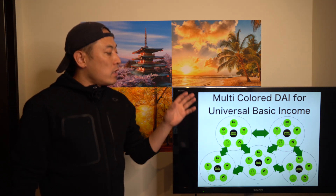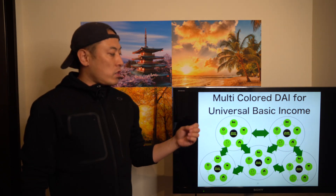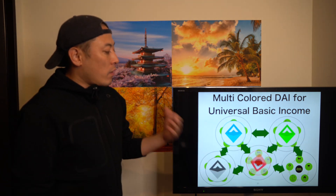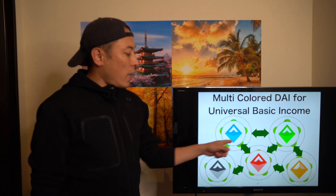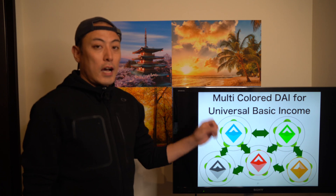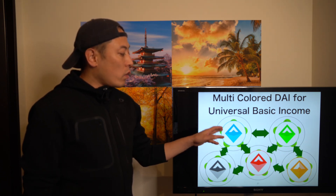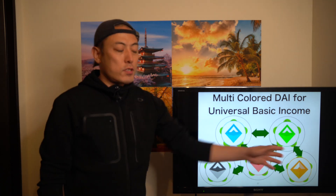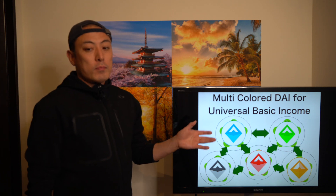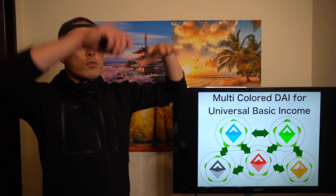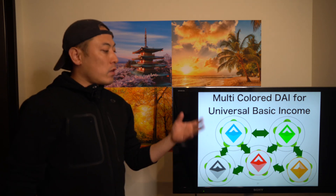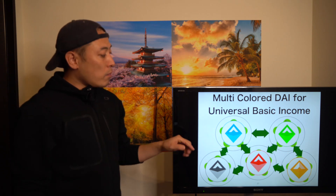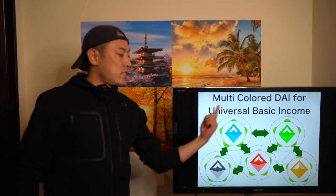For universal basic income, the funds go directly to each community economy. For example, in community A, they issue a blue-colored DAI token that can only be used within that community's economy — no other economy. This is what makes it effective, because the community wants to build a circular economy inside.